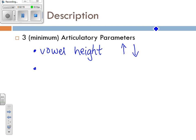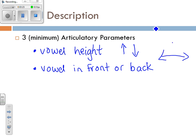Secondly, you can talk about where your tongue is in terms of toward the front of the mouth versus toward the back. Some vowels are produced closer to the front of the mouth. If you compare vowels like 'ooh,' 'oh,' and 'ah,' your tongue tends to move a little bit further back, although the difference between front and back is a little more subtle to feel than the difference between a high versus a low vowel.